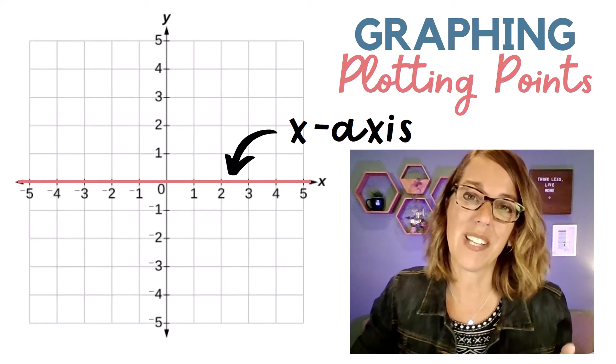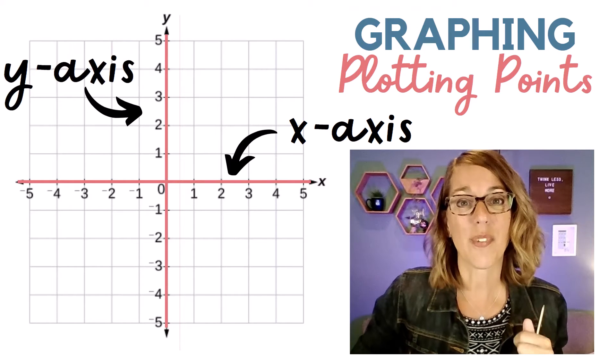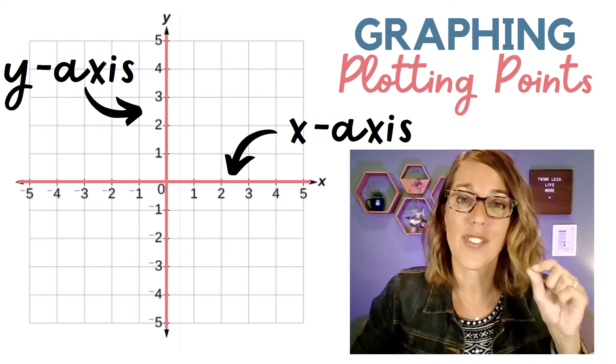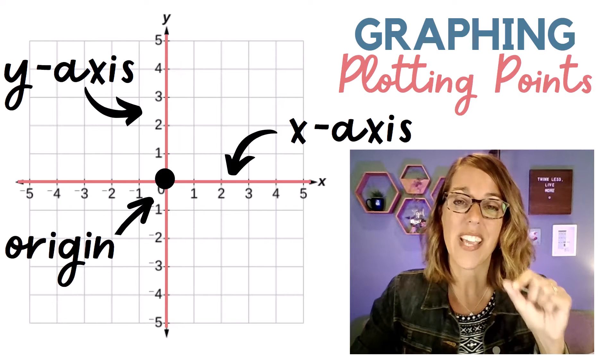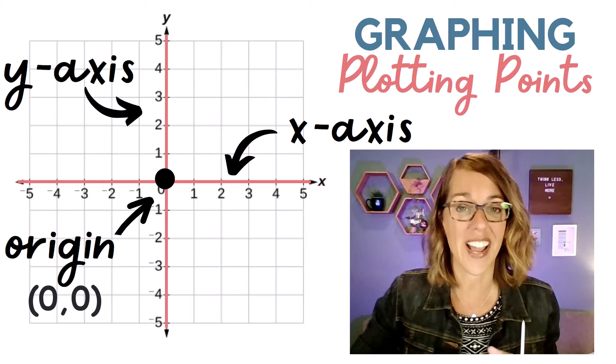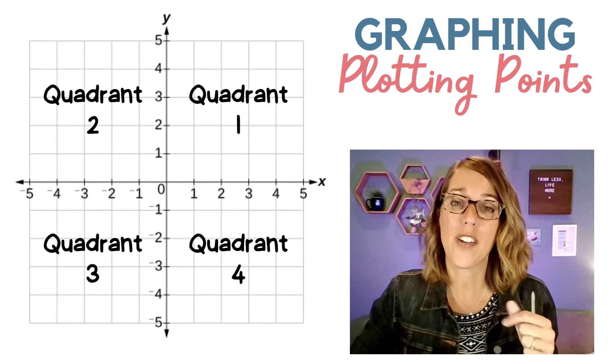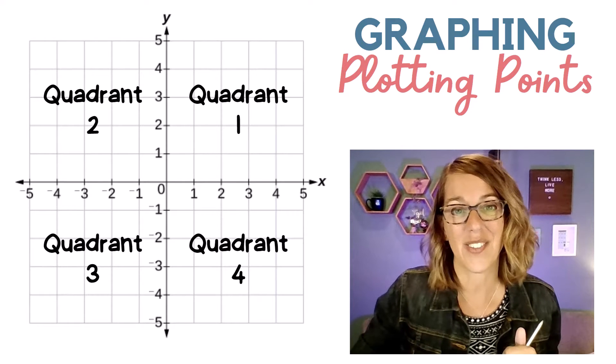We've got our Y-axis, which is tipped up on its side, also with zero in the middle. Where those two axes cross, we have the origin—the point where X is zero and Y is zero. These axes divide our coordinate system into four quadrants numbered just like you see here.